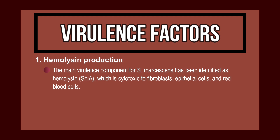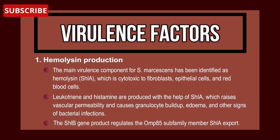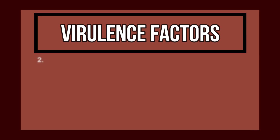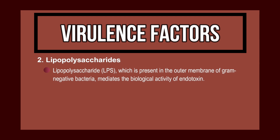ShlA is cytotoxic to fibroblasts, epithelial cells, and red blood cells. Leukotrienes and histamine are produced with the help of these hemolysins, which raises vascular permeability and causes granulocyte buildup, edema, and other signs of bacterial infection. The ShlB gene product regulates the OMP85 subfamily member ShlA export.